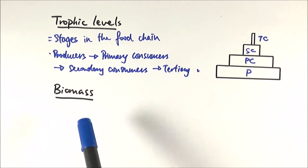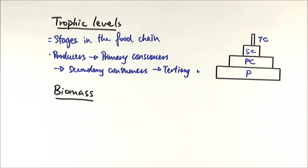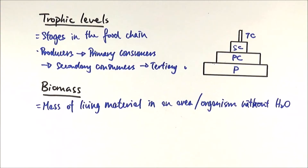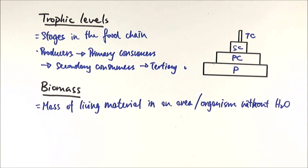This pyramid can also be used to represent the biomass of each level. Biomass is the mass of living material in an area or in particular organisms, excluding water content. We don't consider water in biomass because water levels can fluctuate within an organism depending on the time of day or the environment, so it is not a true representation of the energy in a particular organism.